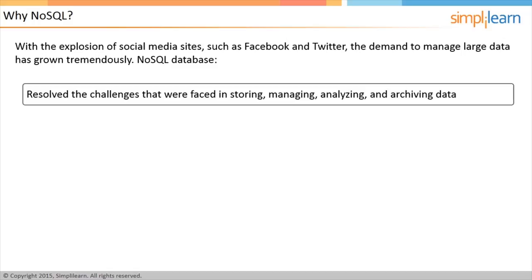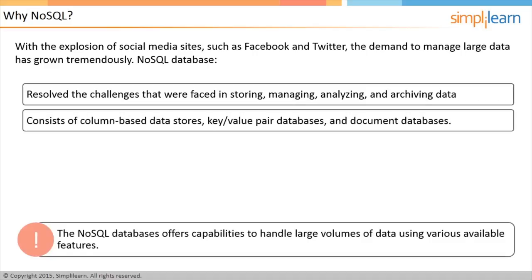To resolve the problems related to large volume and semi-structured data, a class of new database products has emerged. These new classes consist of column-based data stores, key-value pair databases, and document databases. Together, these are called NoSQL. The NoSQL database consists of diverse products, each with unique sets of features and value propositions.